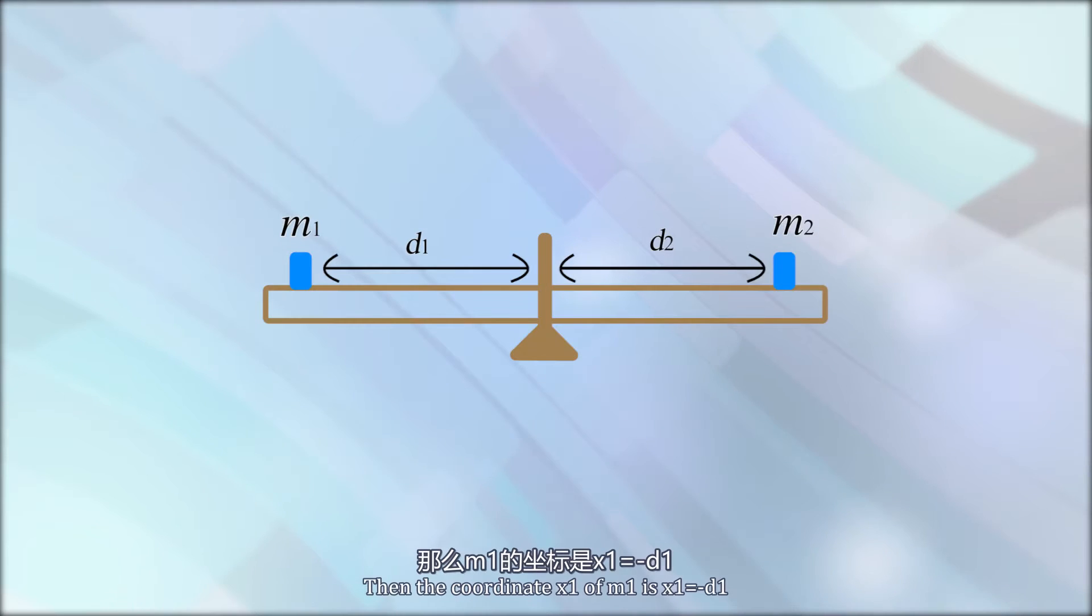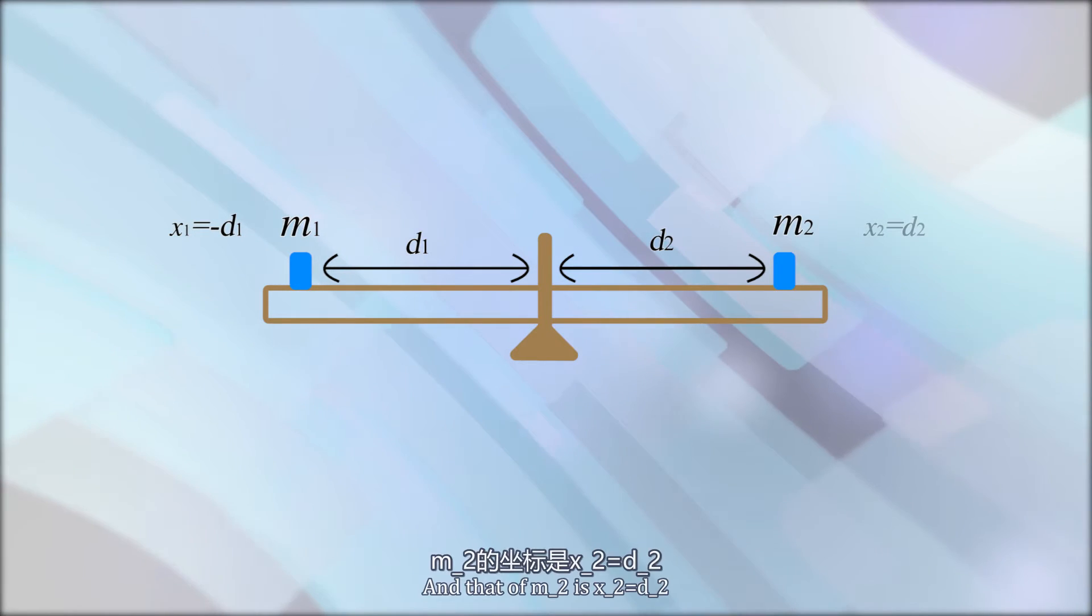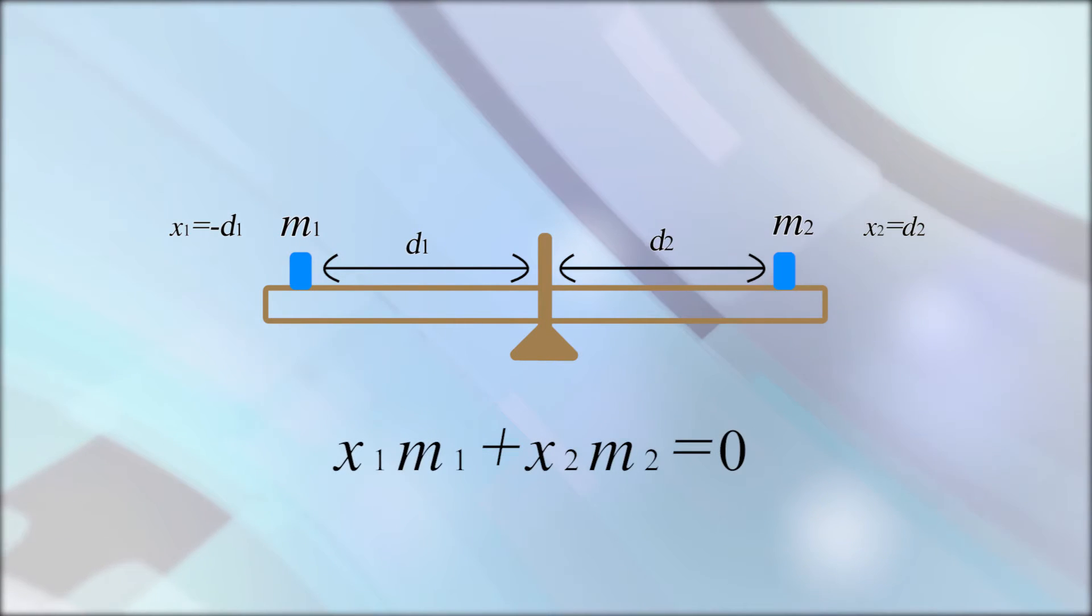Then, the coordinate x1 of M1 is x1 equals minus D1, because x1 is to the left of the origin. And that of M2 is x2 equals D2, and the condition for balance is x1 M1 plus x2 M2 equals zero.